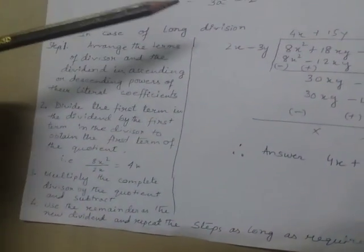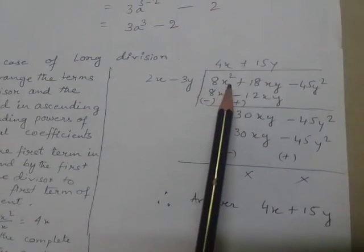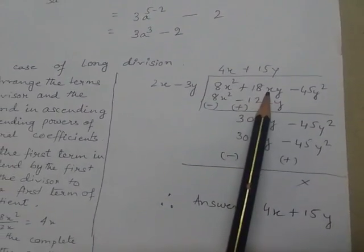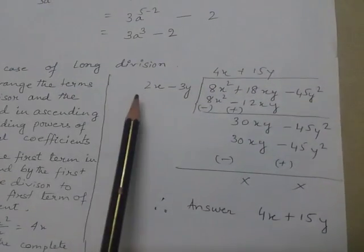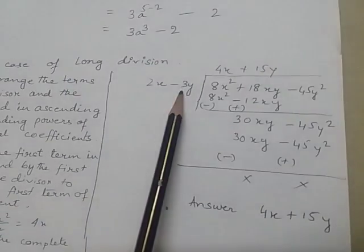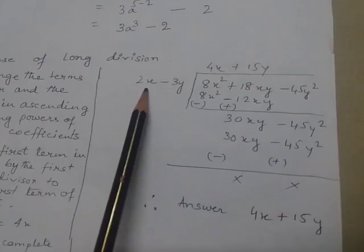Whatever I have explained, let me try it out here. My dividend is 8x² + 18xy - 45y². My divisor is 2x - 3y. As I said, divide the first term of the dividend by the first term of the divisor.